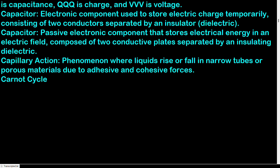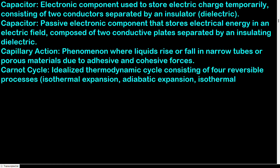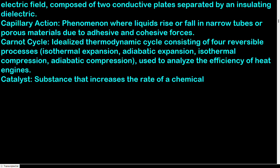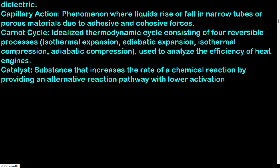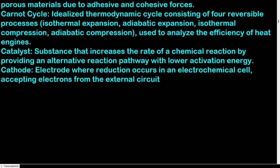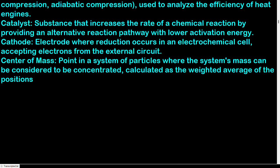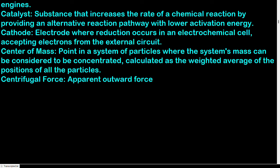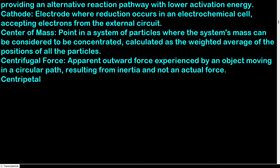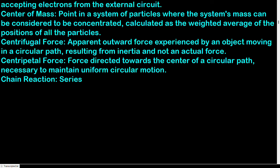Carnot cycle: idealized thermodynamic cycle consisting of four reversible processes — isothermal expansion, adiabatic expansion, isothermal compression, and adiabatic compression — used to analyze the efficiency of heat engines. Catalyst: substance that increases the rate of a chemical reaction by providing an alternative reaction pathway with lower activation energy. Cathode: electrode where reduction occurs in an electrochemical cell, accepting electrons from the external circuit. Center of mass: point in a system where the system's mass can be considered concentrated, calculated as the weighted average of particle positions.